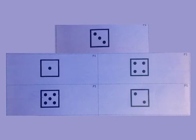What is the number on each dice? Three, one, four, five, two.